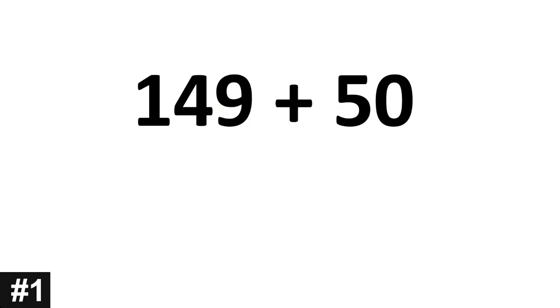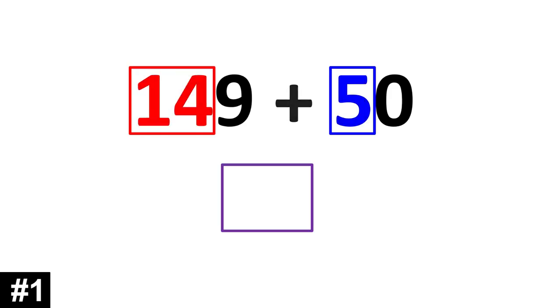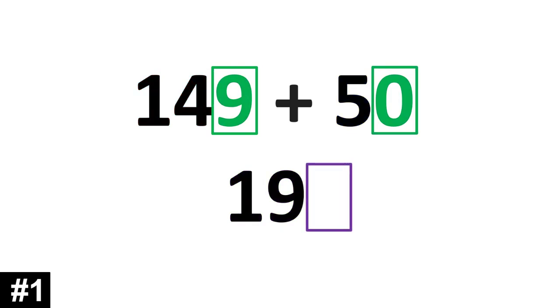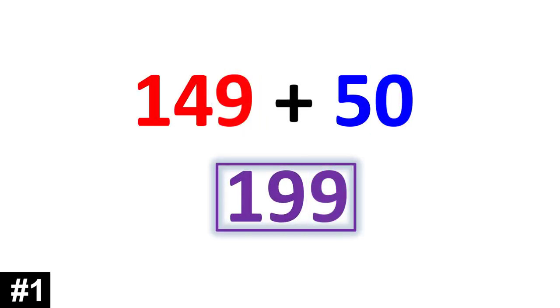So let's take a look at this first example. 149 plus 50. The key is just focusing on the tens. 149 has 14 tens, and 50 has 5 tens. So we add them together. 14 plus 5 gives us 19. Then we look to the ones digit. 9 plus 0 is 9. So, 149 plus 50 is 199.